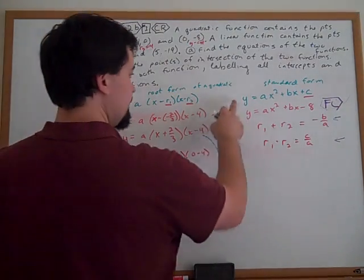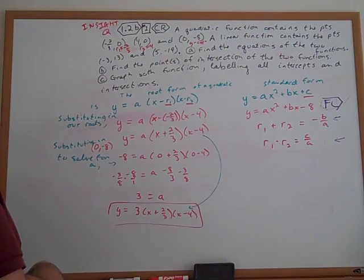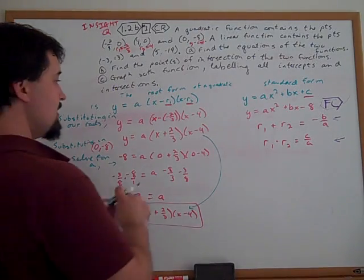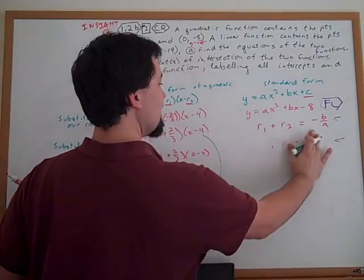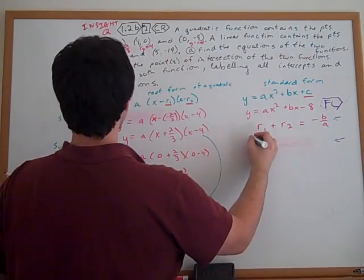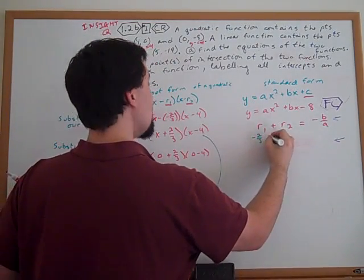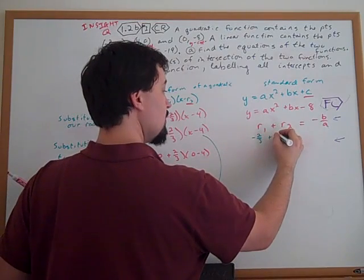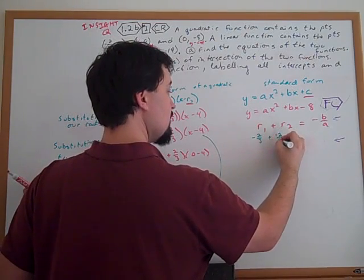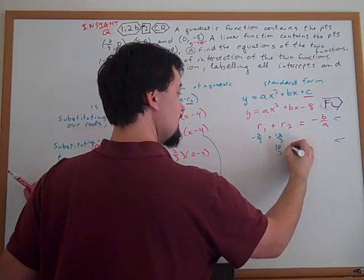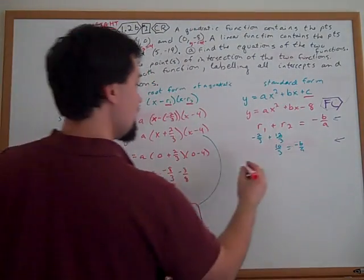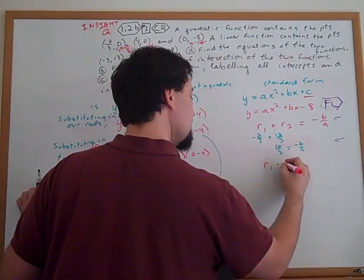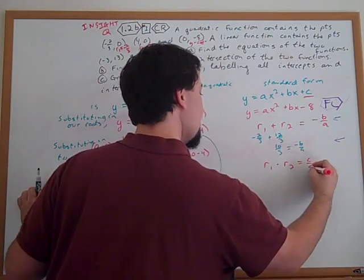Over here, what we can do with these two ideas is adding the two roots together... I'm going to leave a little bit of space here. Adding the two roots together, we get negative 2 thirds plus 4, which is 12 thirds, containing 10 thirds, and that's the opposite of B over A. And when we multiply the two roots together, we should get C over A.